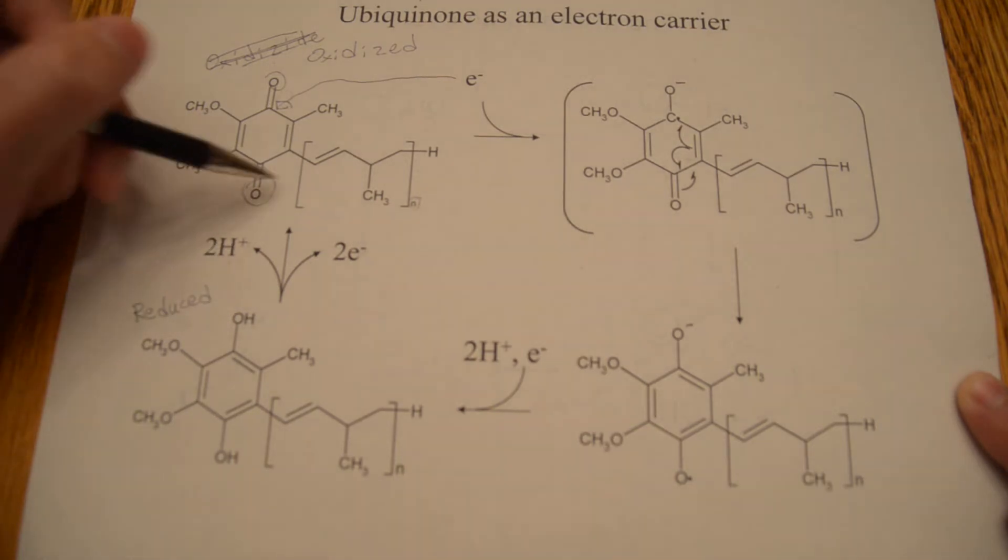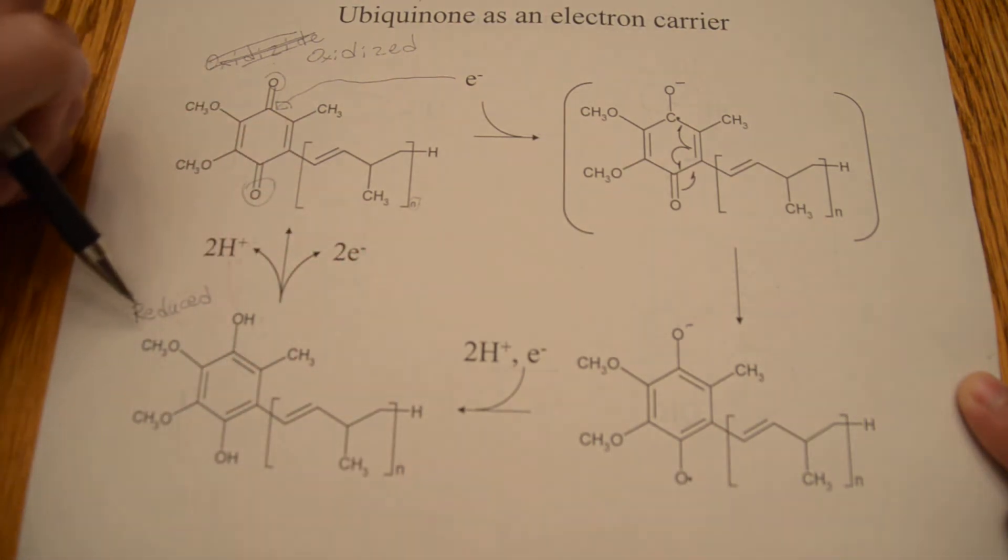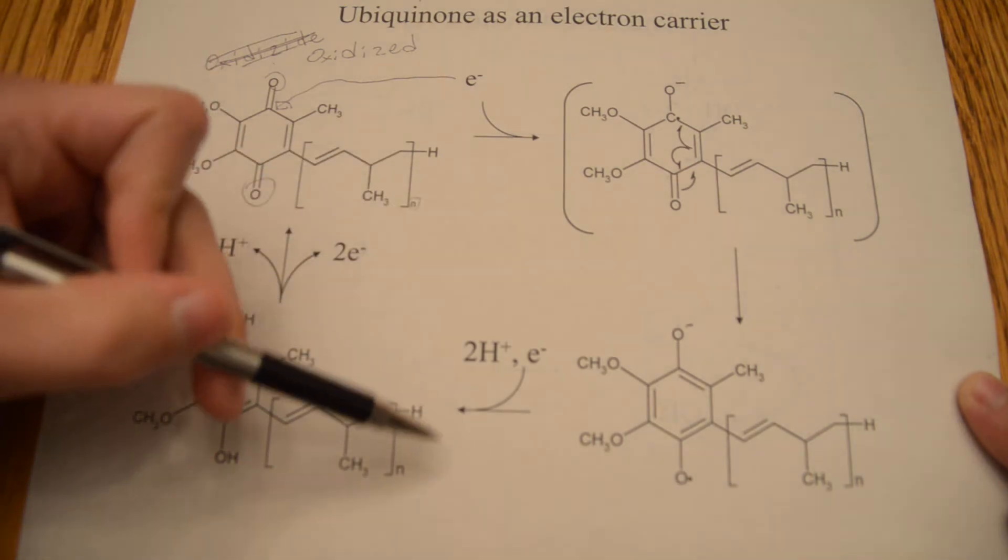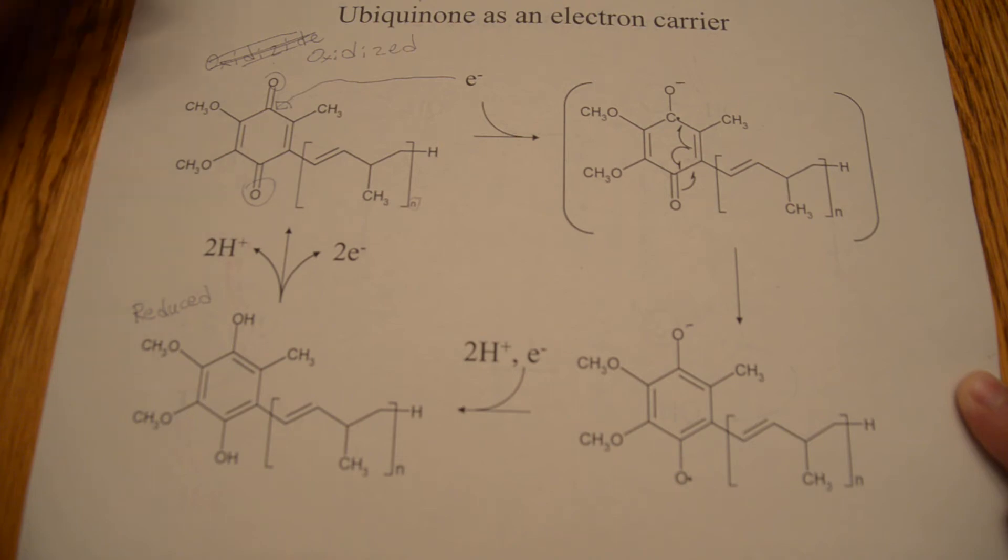So to go from this step to this step, now this molecule travels within the intermitochondrial membrane to complex 3. And then at complex 3, it will transfer its electrons to complex 3, which will then continue on down the electron transport chain, ultimately ending with oxygen getting reduced.